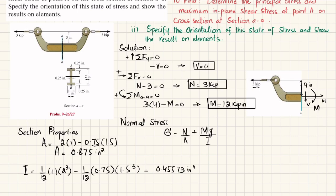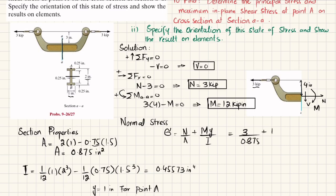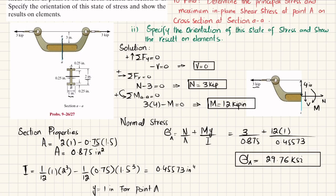Point A is at a distance of y = 1 inch from the neutral axis. Substituting: σ = 3/0.875 + 12×1/0.45573 = 29.76 ksi. This is the normal stress acting at point A.